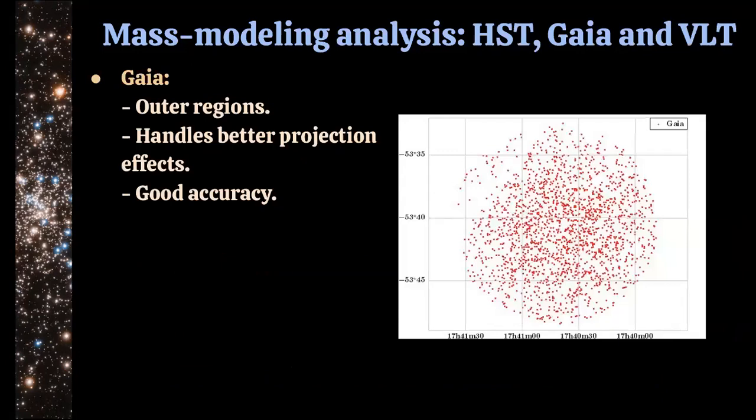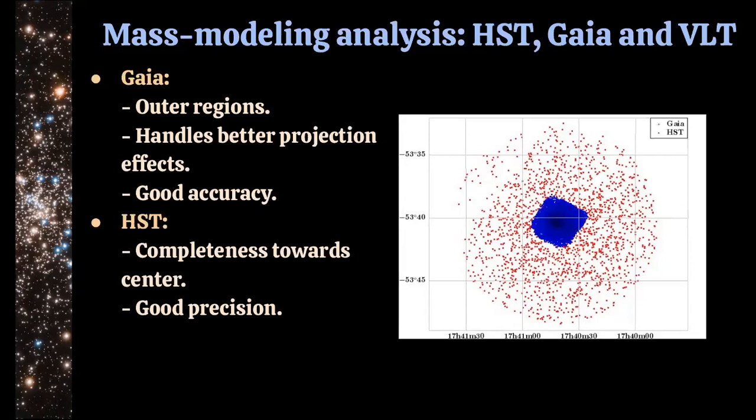We performed the analysis with proper motions, since the former work by Kamann et al. was using line-of-sight velocities from the MUSE spectrograph. We added Gaia stars and HST stars to the dataset. Gaia stars, shown in red, cover a big part of the sky and help account for projection effects. HST is the big hero when trying to model the inner parts — it has very complete star coverage in the center, especially compared to Gaia, and also has very good precision.